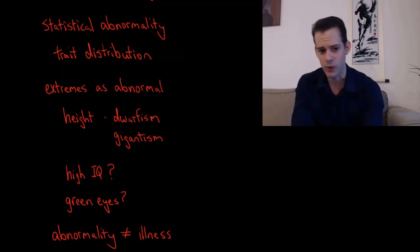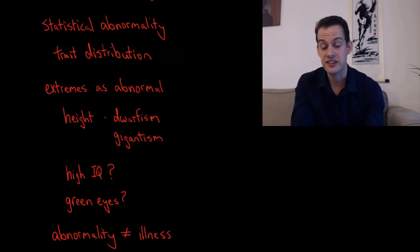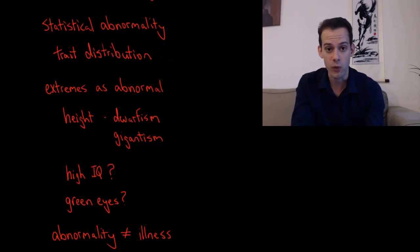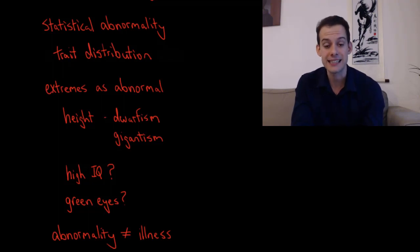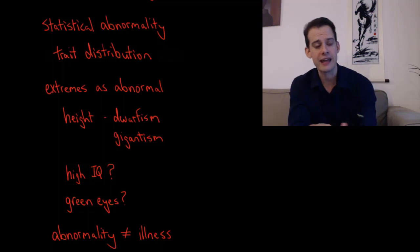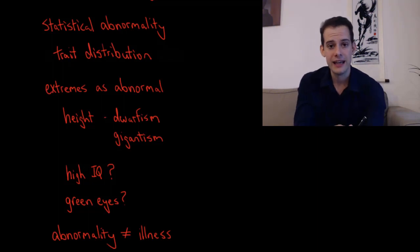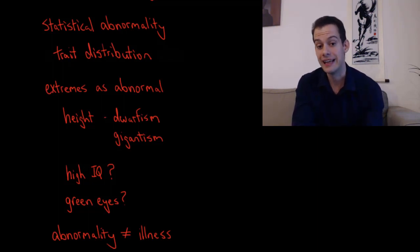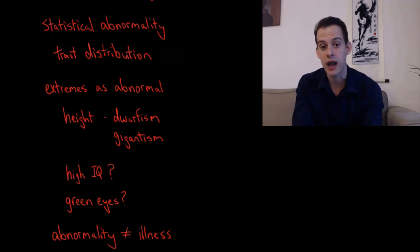The same is true for other traits. We could pick something like green eyes — this is statistically abnormal, with only about 2% of people in the world having green eyes — and yet we don't consider that to be a sign of any illness or disorder. So the point is that statistical abnormality is not necessarily an indication of illness, and we can't rely on it alone.